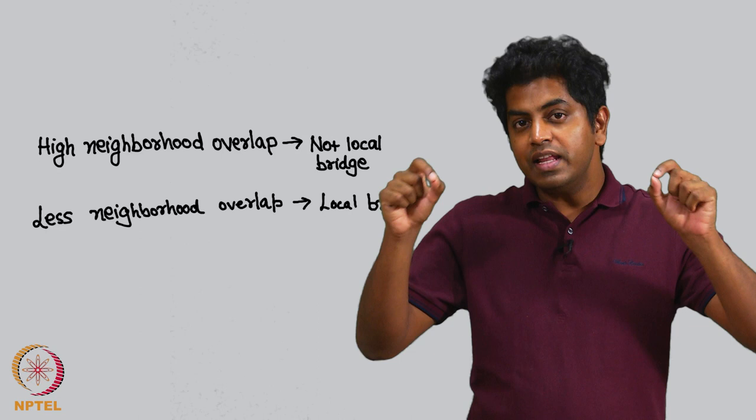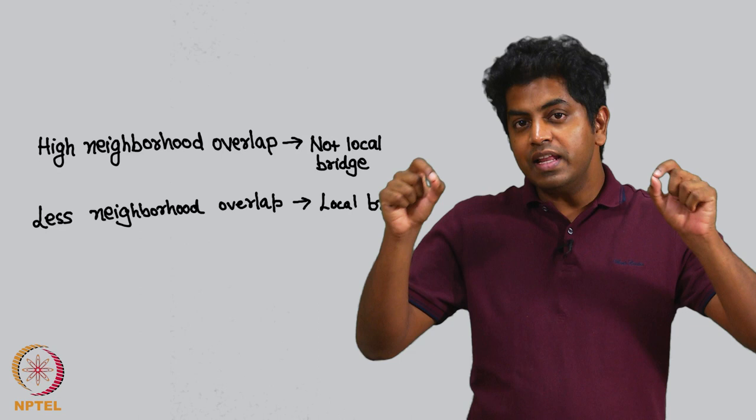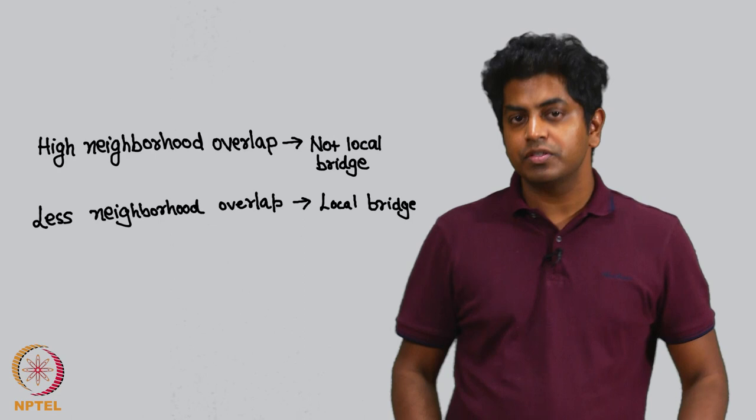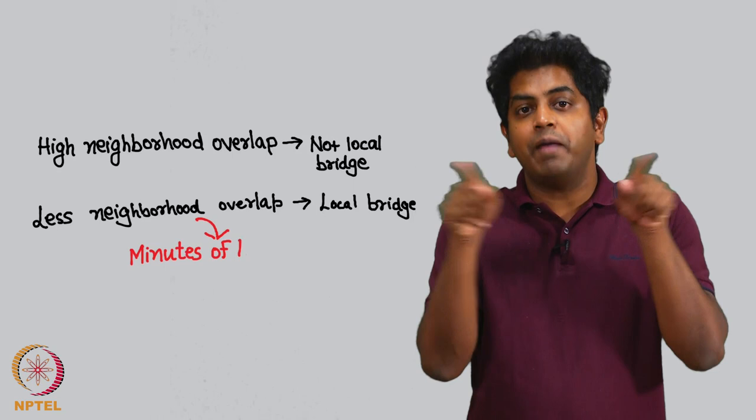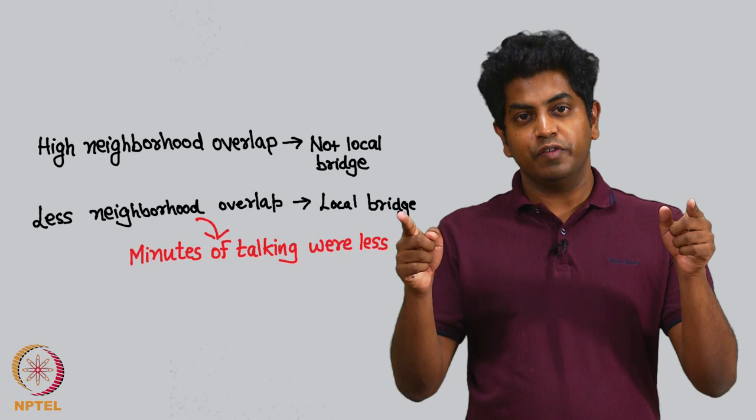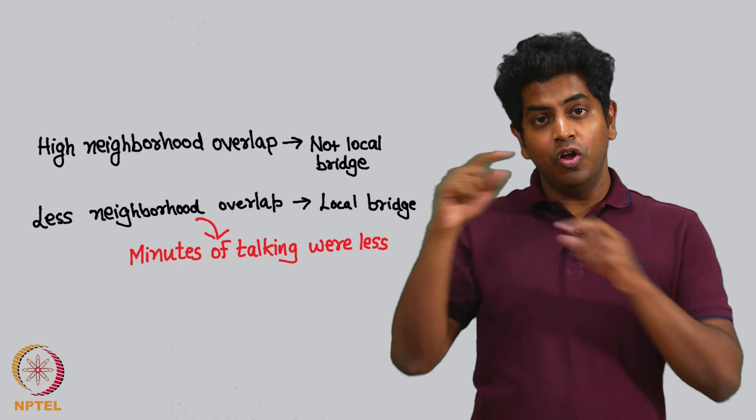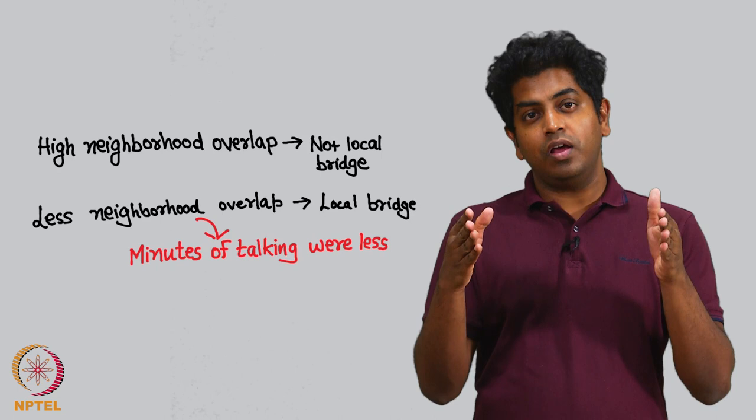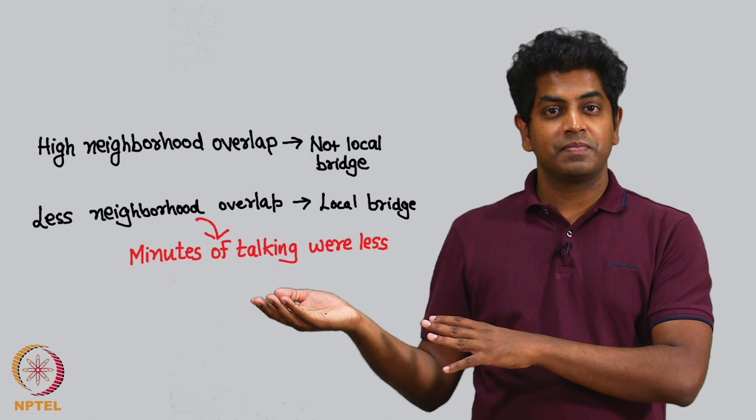It was observed on this cell phone data that for those edges with very less neighborhood overlap, which means it's close to being a local bridge, the cell phone talking that happened across this friendship was also very less. Which means higher the cell phone conversation between two friends, smaller the local bridge property. Lesser the duration of the phone call, closer it is towards the local bridge.